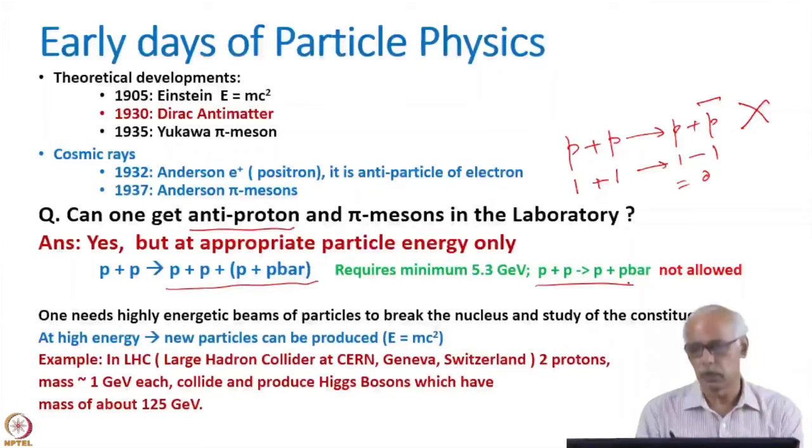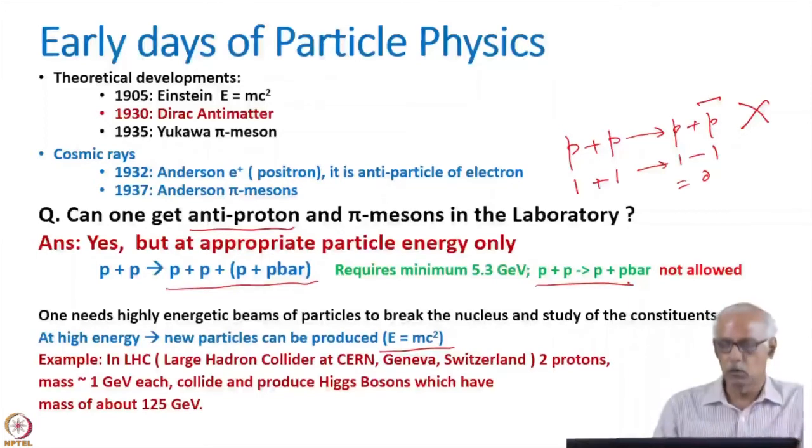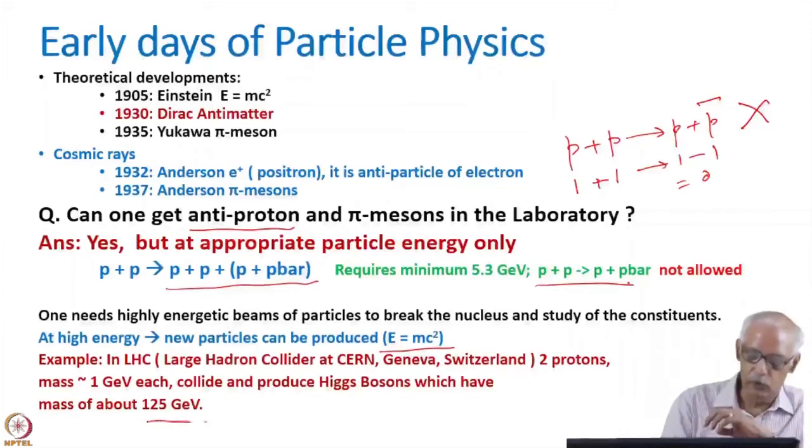And that comes from the Einstein equation, E equals MC squared. This has been done at, for example, Large Hadron Collider, which is in Geneva, Switzerland. Where two protons of mass 1 GeV each collide, interact with each other. And even the particles like Higgs bosons were produced, which has a very large mass. So you can see that accelerators can do wonders in different fields.